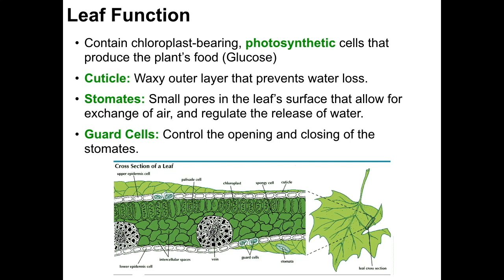The stomates are surrounded by what are called guard cells. These are cells that will open and close to regulate the stomata. What the guard cells do is allow the plant to control when it's going to exchange gases and when it's going to release water. Typically, the guard cells will be open when there is plenty of water and will close when it is dry, helping prevent water loss through the stomates. There is a trade-off that occurs within the plant leaf: in order for photosynthesis to happen, we have to absorb carbon dioxide, but when the stomates are open to allow carbon dioxide in, that allows more water out. So the guard cells have to control when to open and close so as not to allow the leaf to lose too much water and dry out.